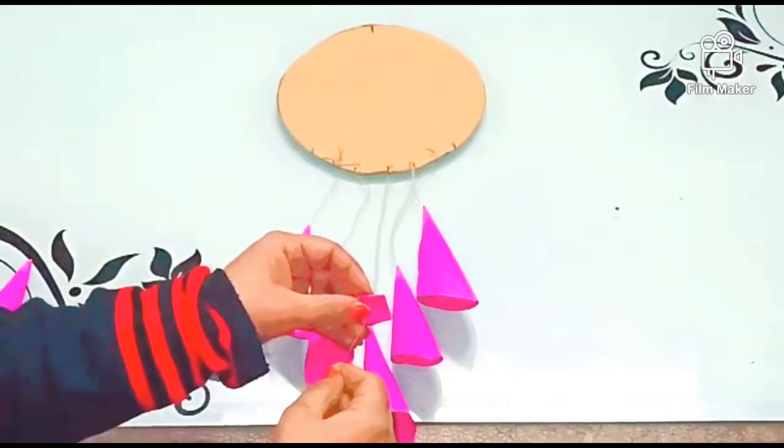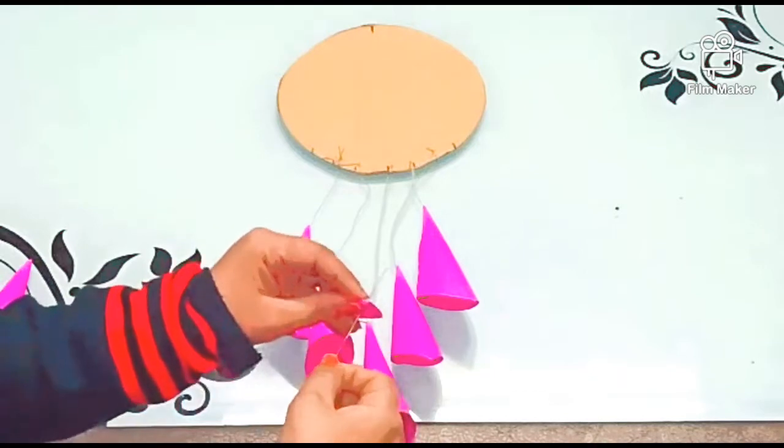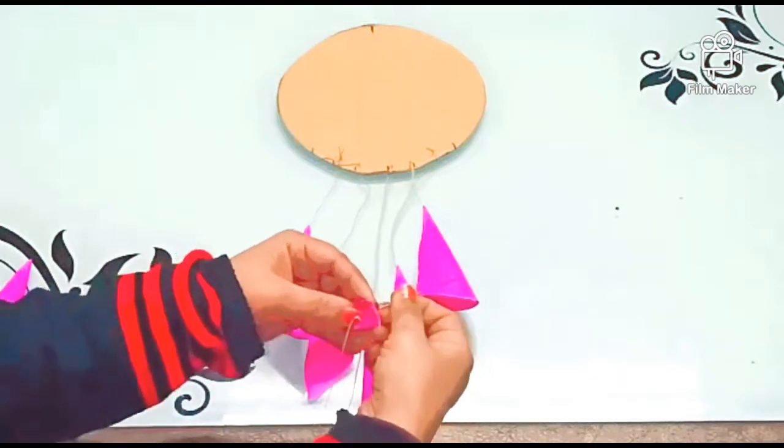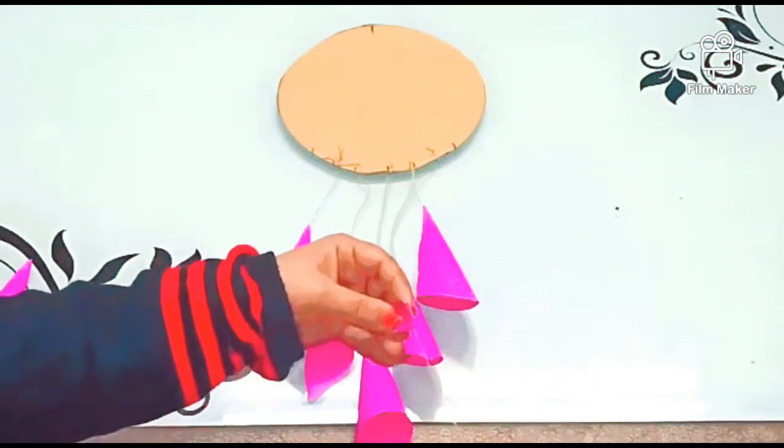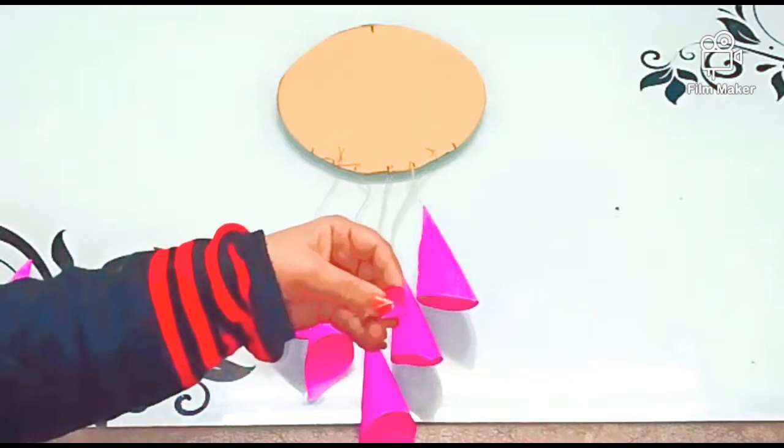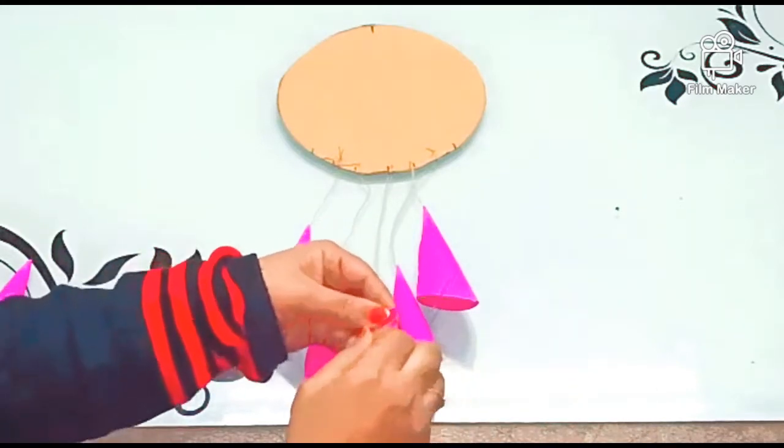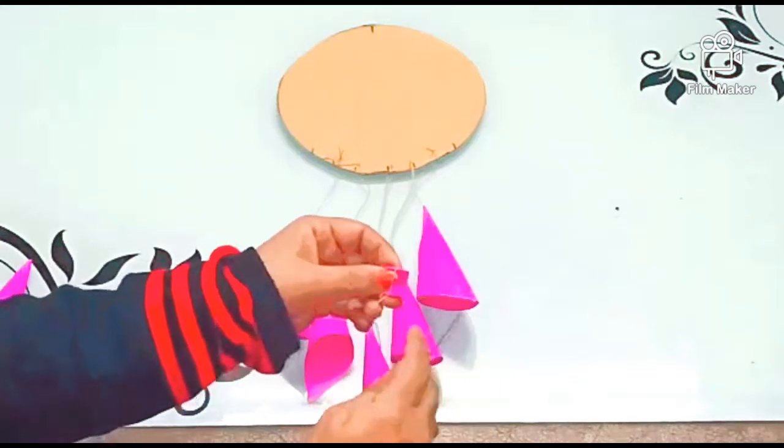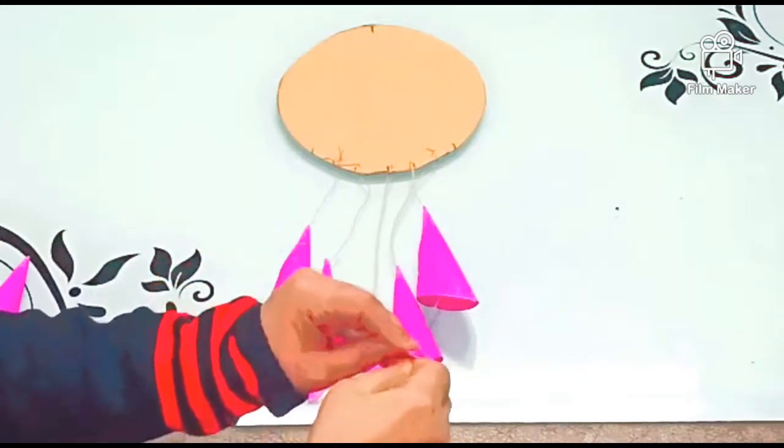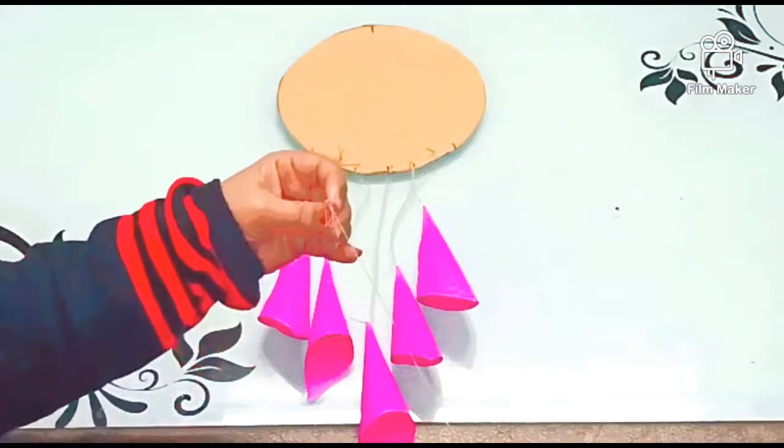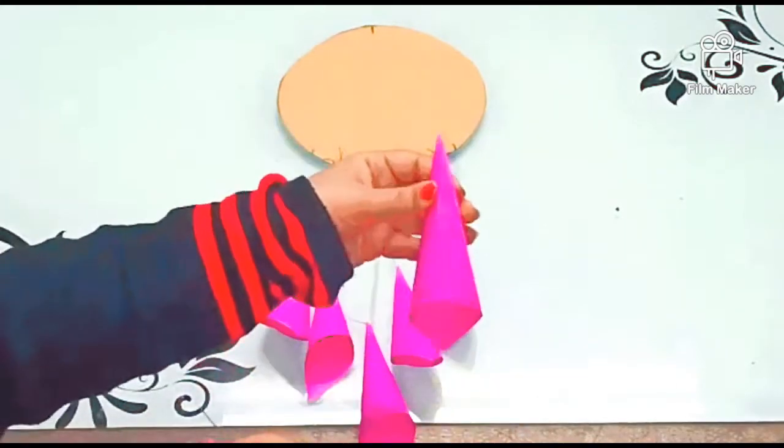So as you all can see, we have made many of them. And we are putting this square so that the cone could not come from the thread. This is playing a role of a knot.